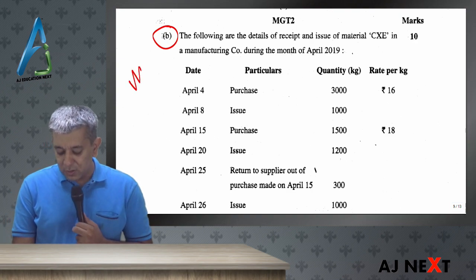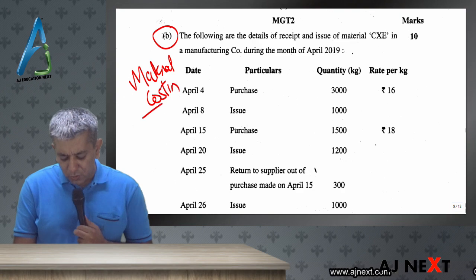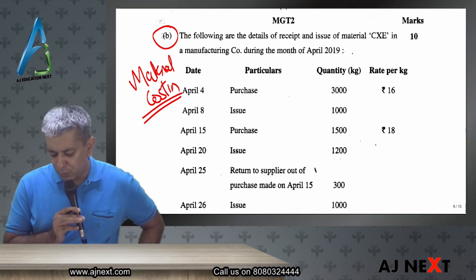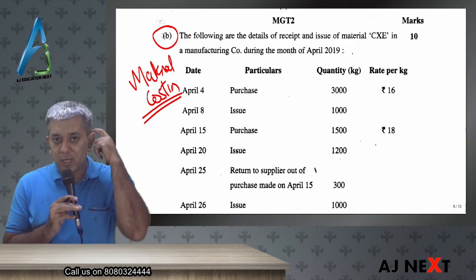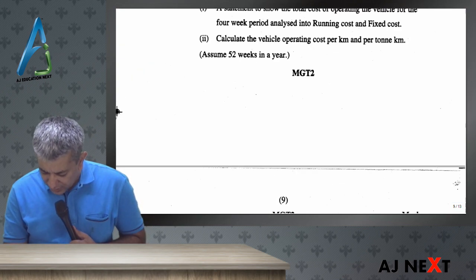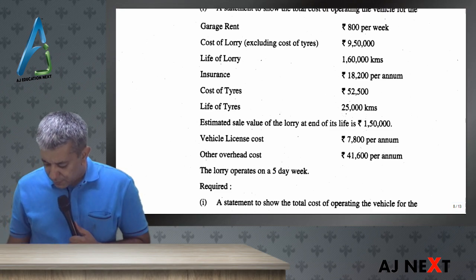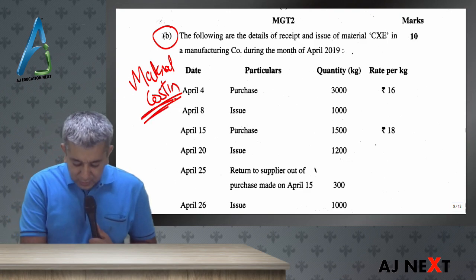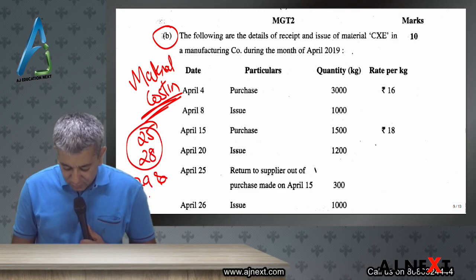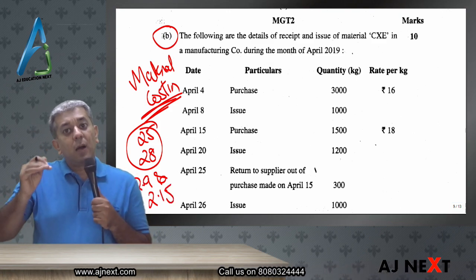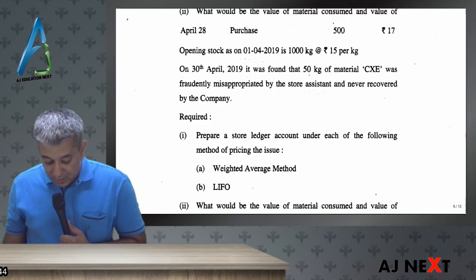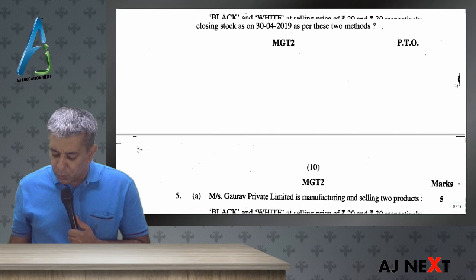Then Part B of question four was material costing. I was slightly surprised — they asked such easy material costing questions. They could have asked EOQ, reorder level, all of that. But they just asked for the stores ledger control account — your FIFO and weighted average methods, all easy adjustments. This was almost the same as question number 25 and question number 28, which are on page number 2.9 and 2.15. Simpler adjustments — we had done every adjustment with separate entries, but here you only had to make the SLC account. This part was again for 10 marks — a bonus for you all.